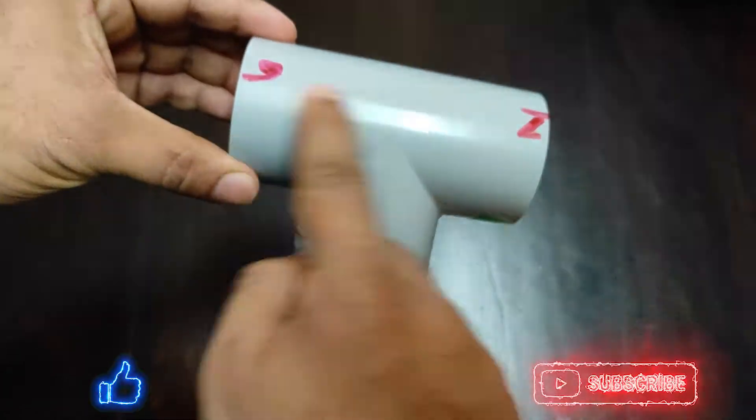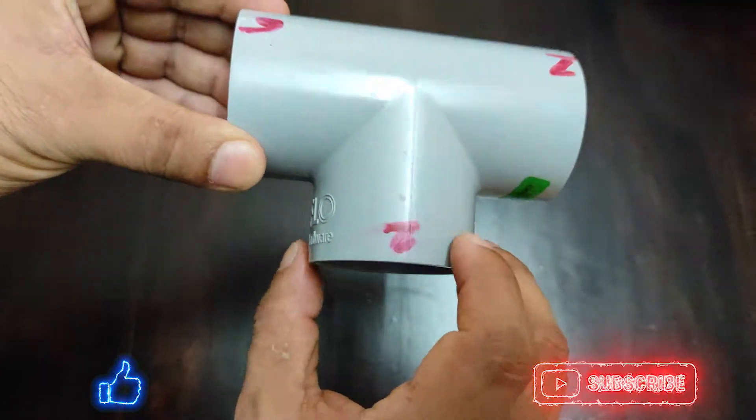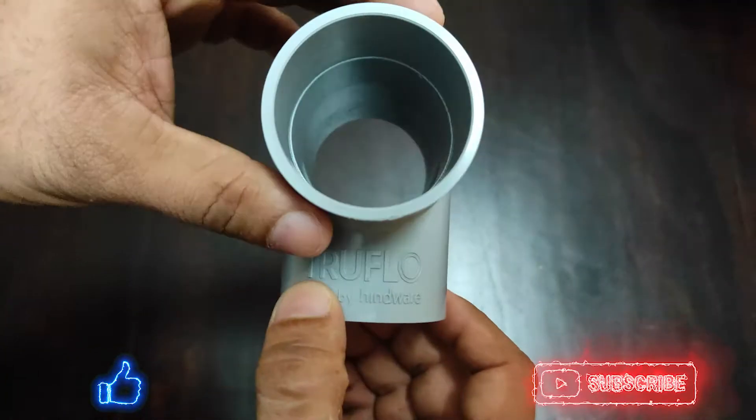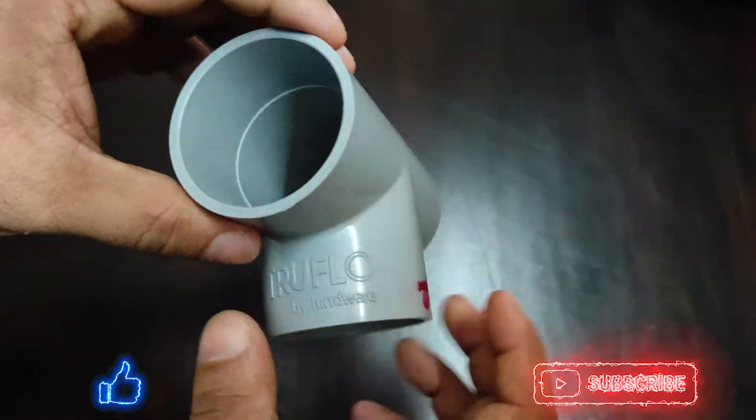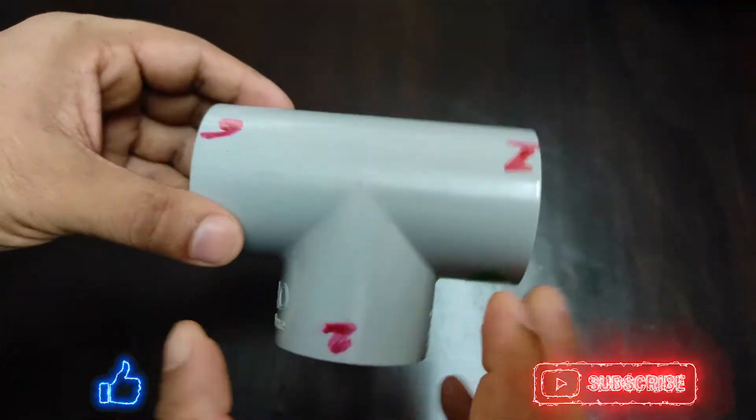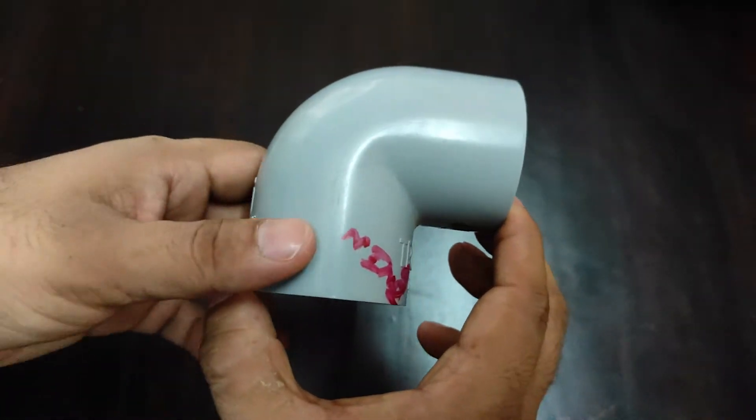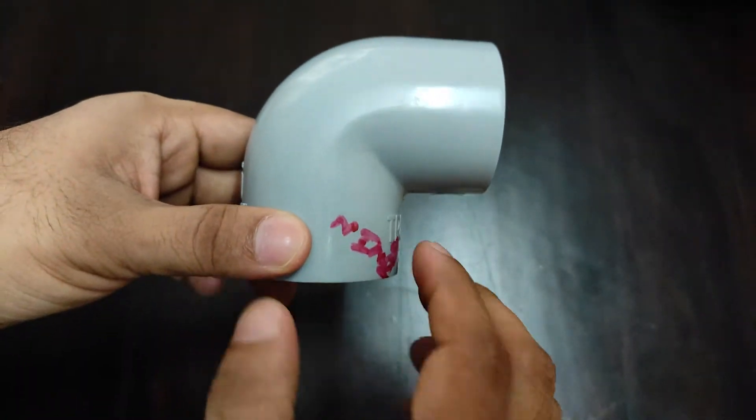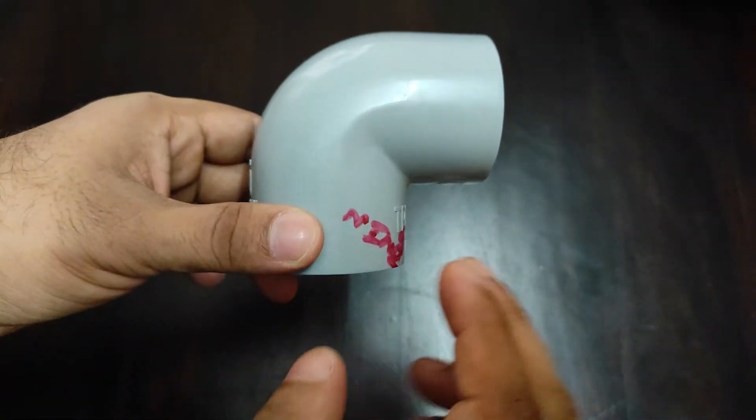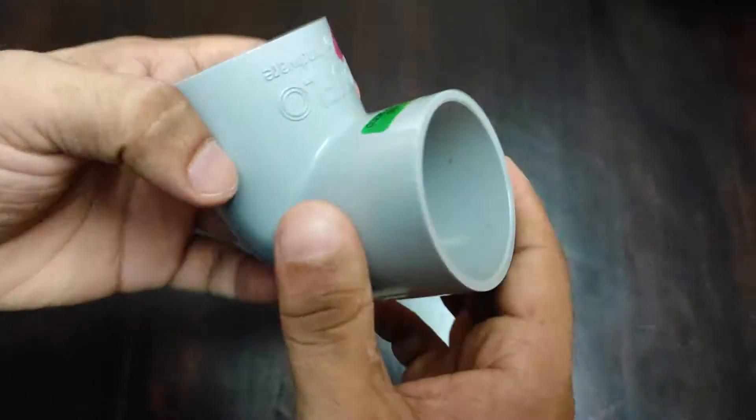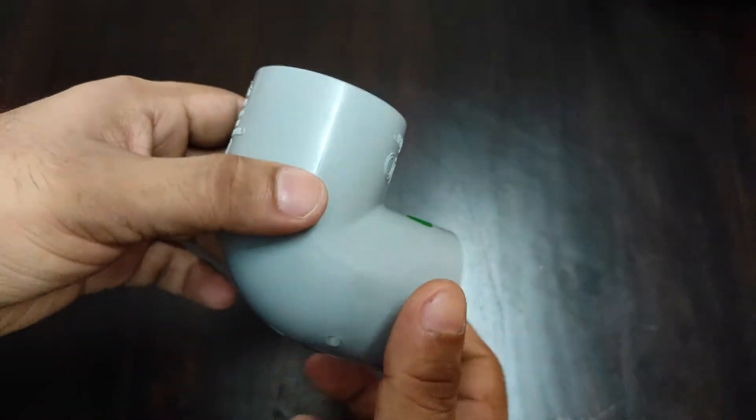This is a T joint. Again, this is what you would need. How many do you need? Again, you would find it in the previous video with the number of the quantity that you need. The other thing that you're gonna need is elbow, it's known as an elbow or a 90 degree joint. It's exactly 90 degrees.